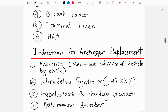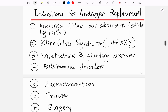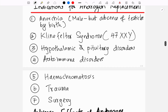Indications for androgen replacement include anorchia — that is, the absence of testicles by birth — where androgens are needed for male secondary sexual characteristic development and sex organ development. Androgen replacement is also used in Klinefelter syndrome.